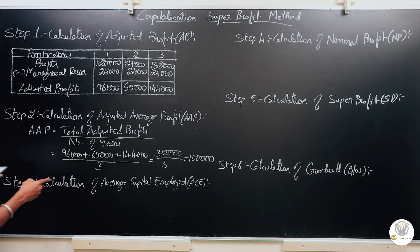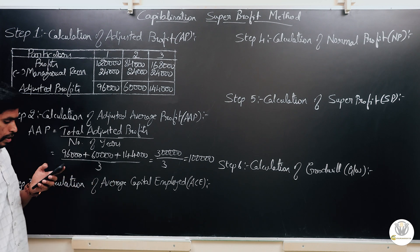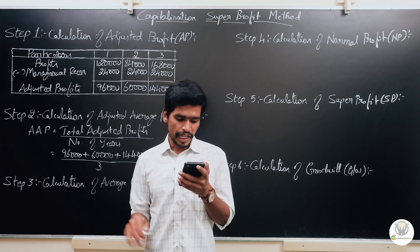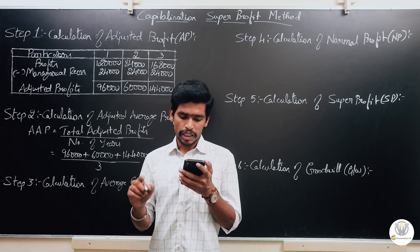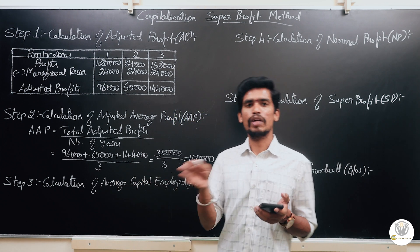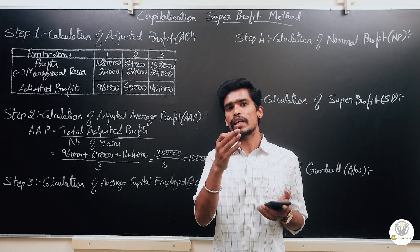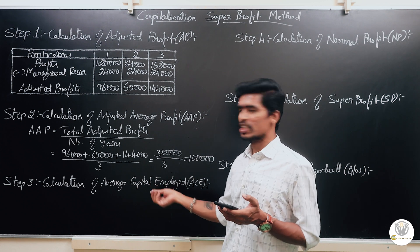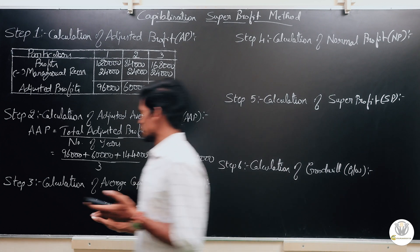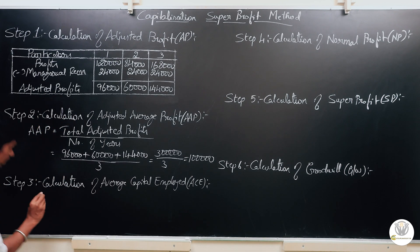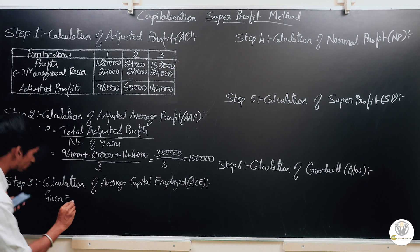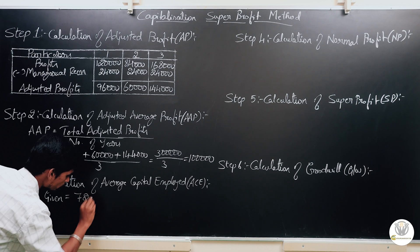Step 3: Calculation of average capital employed. In this problem, average capital employed is directly provided as Rs. 7,20,000. In cases where it is not given, you calculate it as assets minus liabilities. Here, the given average capital employed is Rs. 7,20,000.